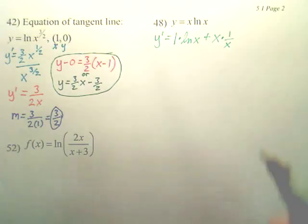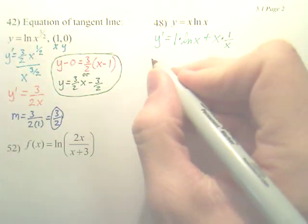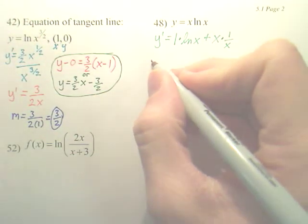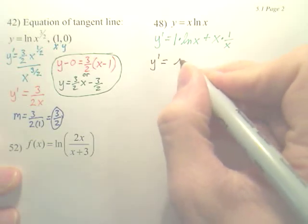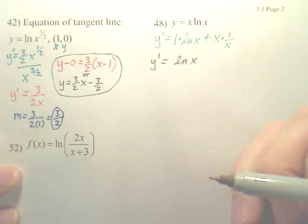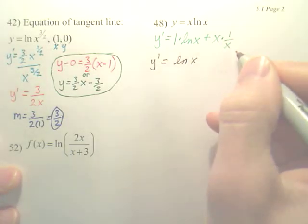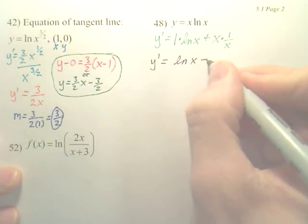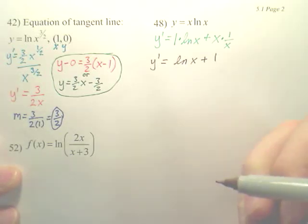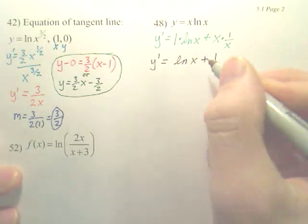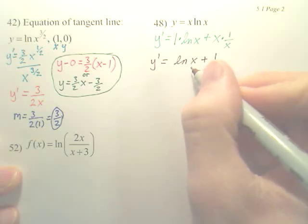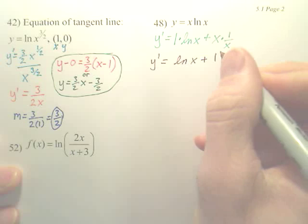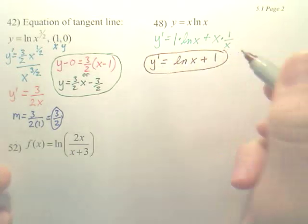If we're going to simplify that, we now have y prime is equal to ln x, because x over x cancels, plus 1. Is that correct? Now, make sure you understand that that plus 1 is not inside the ln. That's ln x plus 1. That's it. It's that simple.